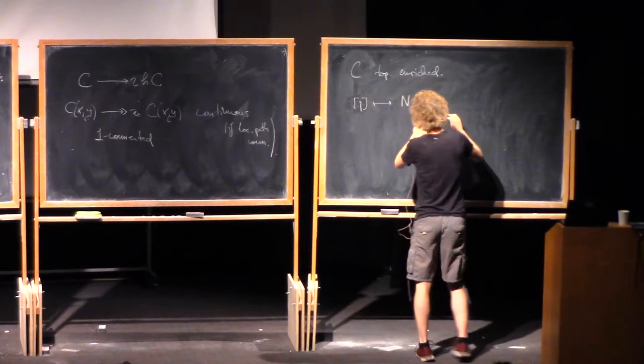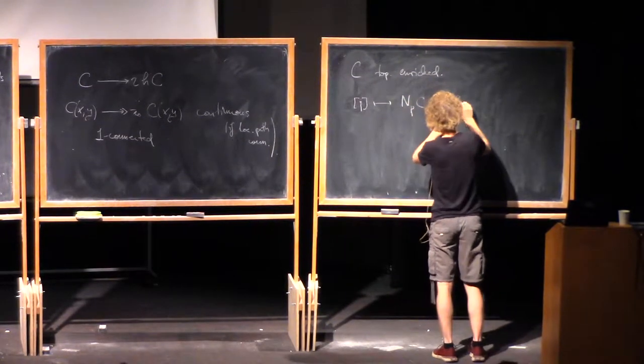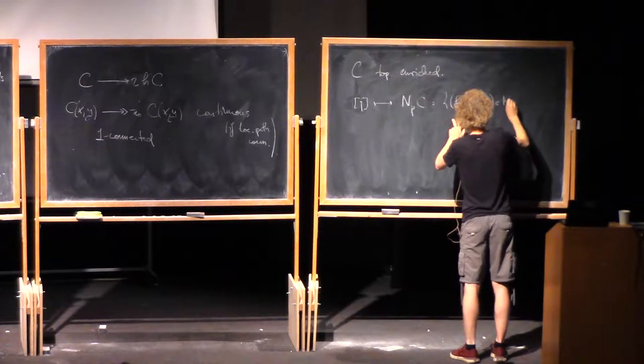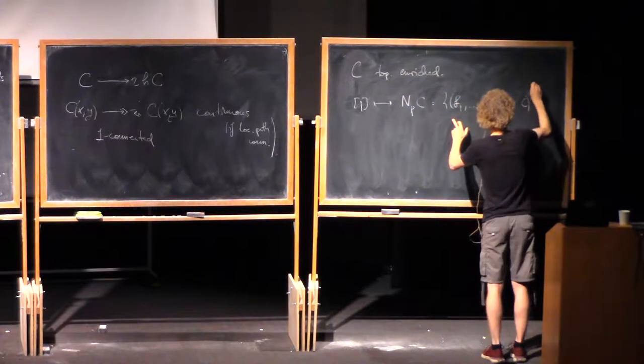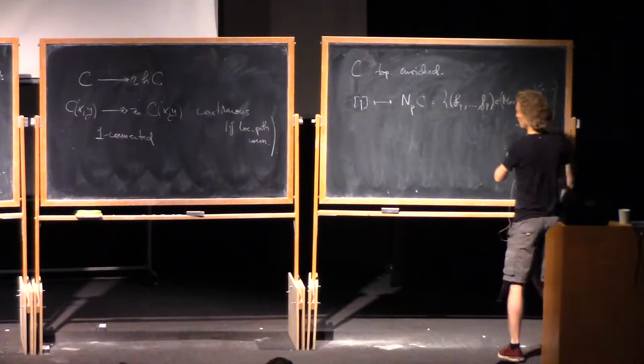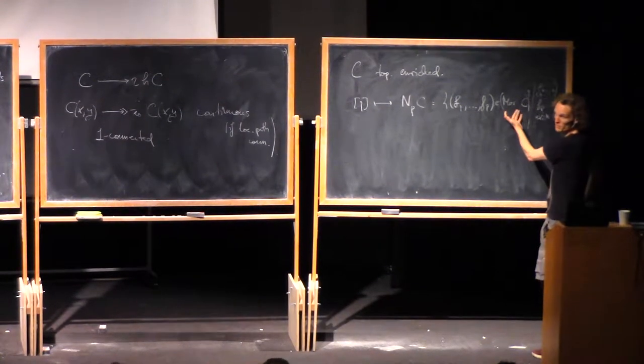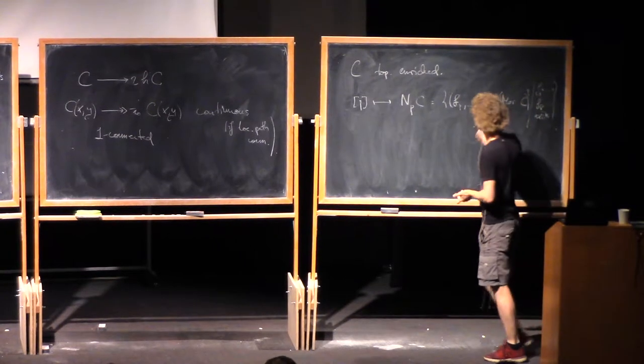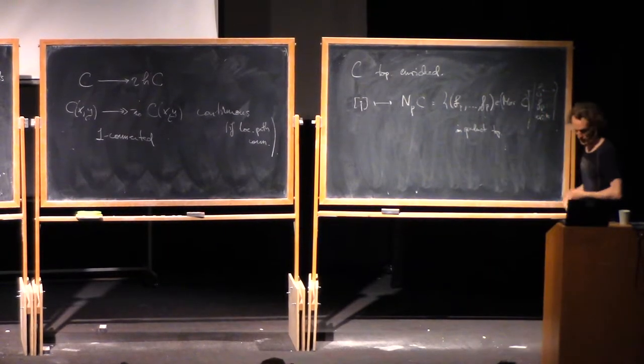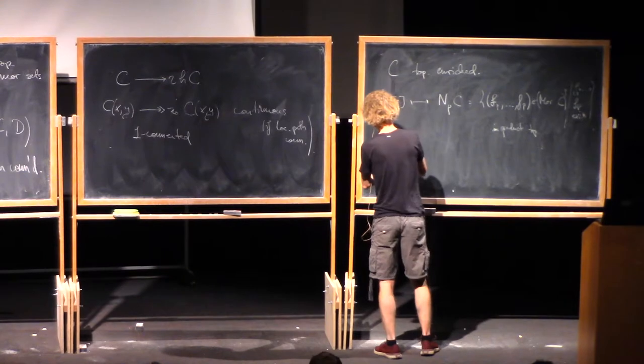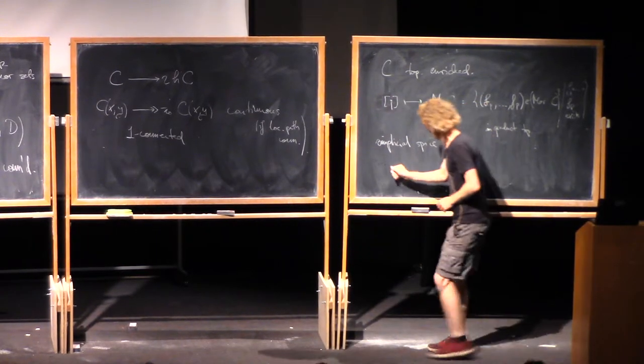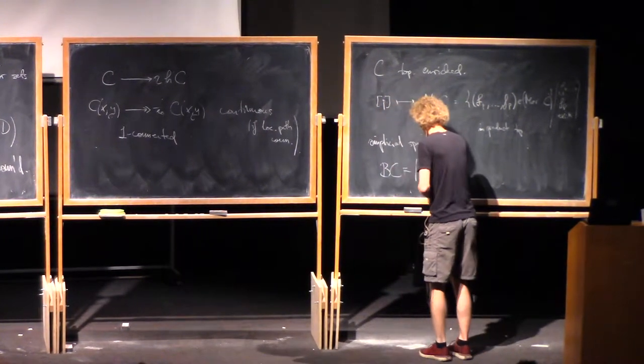Take the nerve. Now take the space of, I mean, take the same underlying set as before. N_p of C means composable p-tuples of morphisms. And now I have topologized morphisms. So just give this the product topology. Then the nerve is a simplicial space.